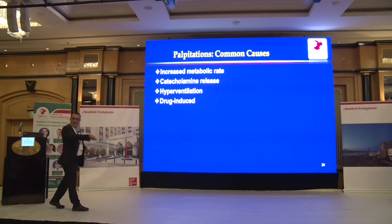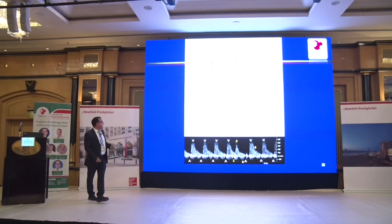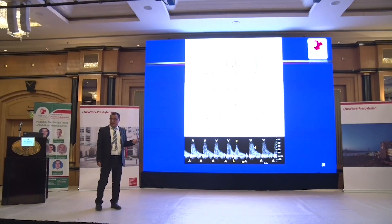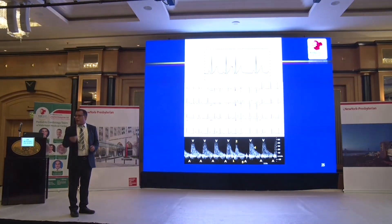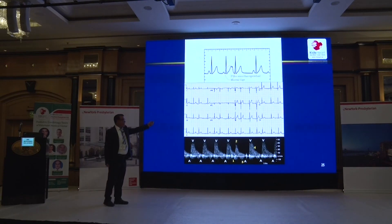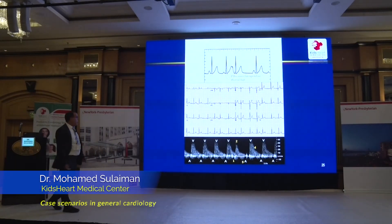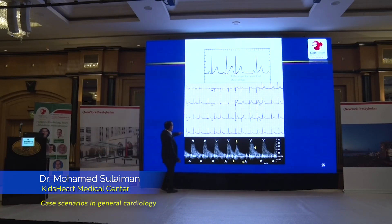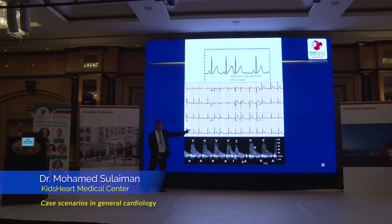For arrhythmia assessment, use the rhythm strip — lead II or lead V1 — rather than all leads together. It gives you the entire long tracing to identify changes. Sinus arrhythmia — variation in the R-R interval — is very common, especially in children. The computer will flag it, but sinus arrhythmia is just a respiratory variation and does not require referral to a pediatric cardiologist.